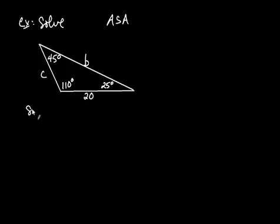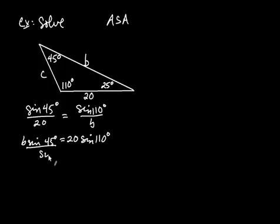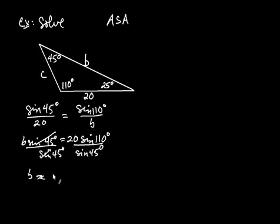Using law of sines: sine of 45 degrees divided by 20 equals sine of 110 divided by B. Cross-multiplying gives B times sine of 45 equals 20 times sine of 110. Dividing both sides by sine of 45, I find B is approximately 26.58. That's a length, not degrees.